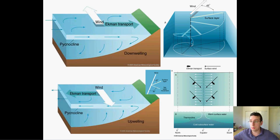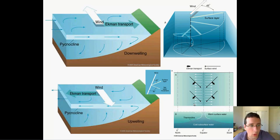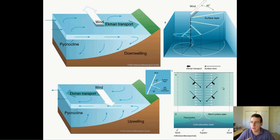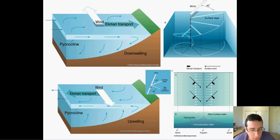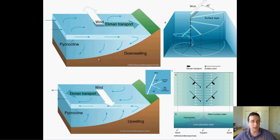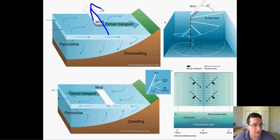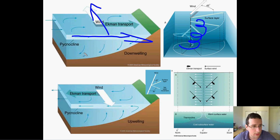Out in the open ocean, this pattern of Ekman transport creates a column of rising water. Because of the way the wind blows and moves the water, it creates a current parallel or at an angle to the actual wind. The surface layer is moving at an angle — in deep water, a 45-degree angle — which means the net water movement is at a 90-degree angle to the wind itself. So if the wind is blowing in a certain direction, the water is forced to move 90 degrees from that direction.